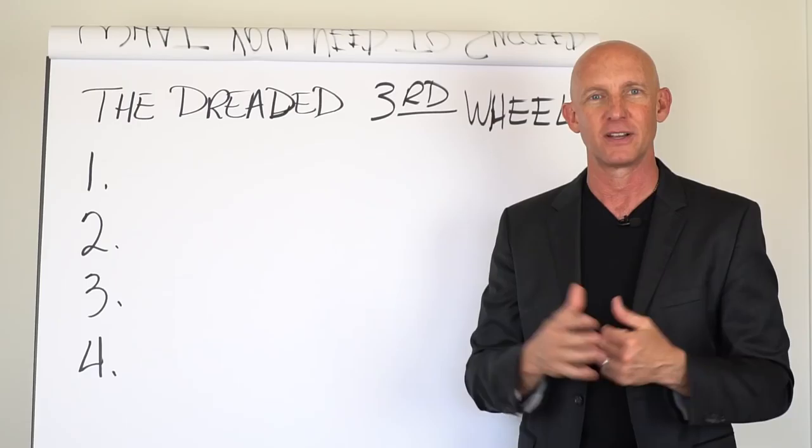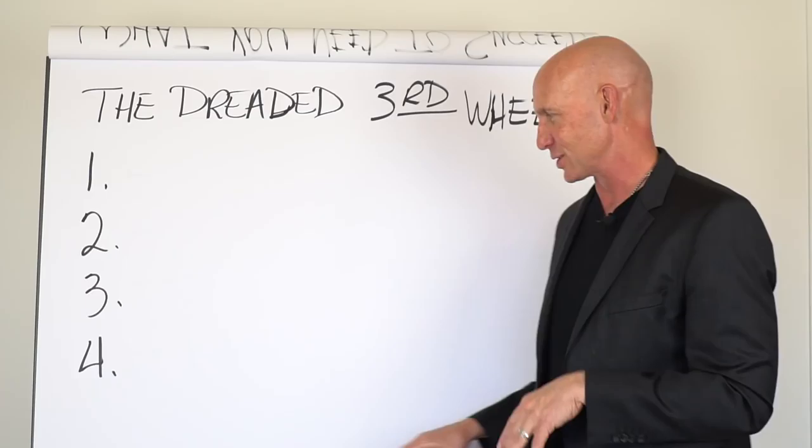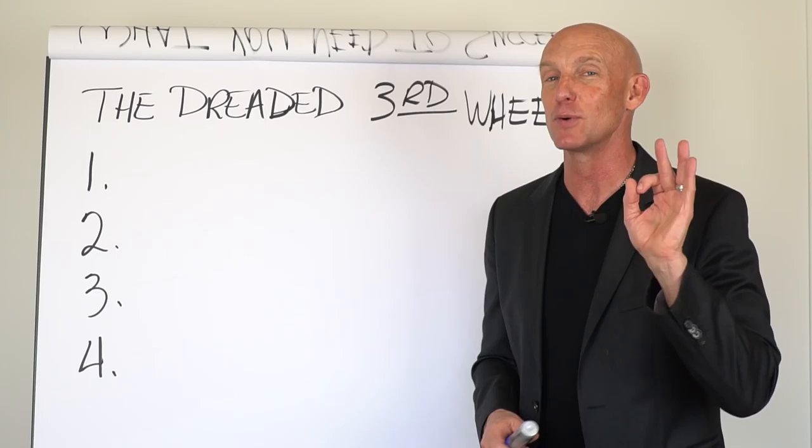So how do you deal with that? And I get asked this question fairly regularly from agents, especially dealing with these younger buyers and sellers. They say, how do you deal with the dreaded third wheel? So I want to share with you a four-step strategy of how you deal with that parent, that well-meaning parent who constantly is undermining you and trying to destroy your credibility. Well, here's how you deal with it, four steps.